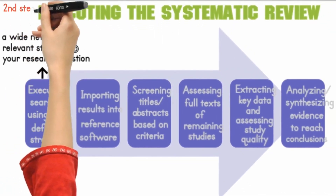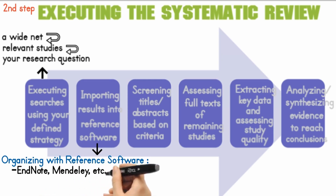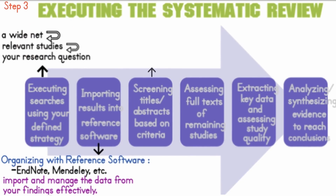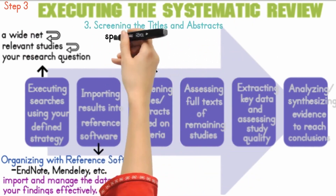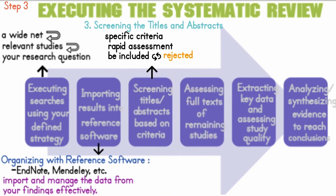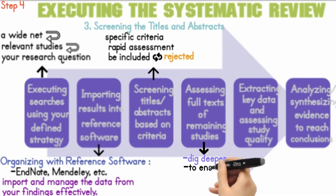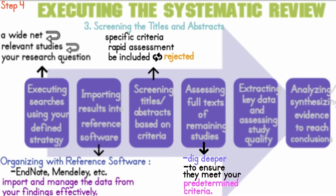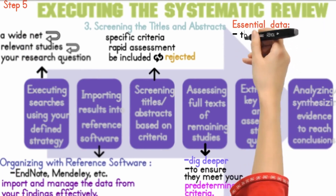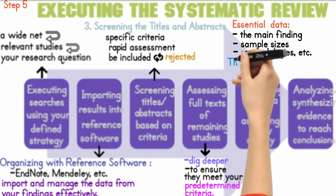Step two: organizing with reference software. Once you've found these studies, organize them systematically using a tool like EndNote, which allows you to import and manage data from your findings effectively. Step three: screening titles and abstracts based on specific criteria — this facilitates rapid assessment of whether studies should be included or rejected. Step four: assessing full texts. Carefully assess the full texts of remaining studies to ensure they meet your predetermined criteria. Step five: extracting key information and evaluating study quality — extract essential data including main findings, sample sizes, and methodologies, then evaluate the overall quality of each study to assess its reliability.